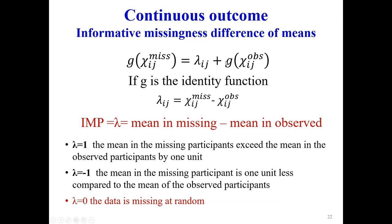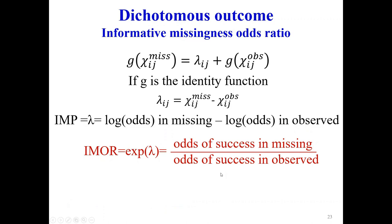If J is the identity function, then lambda is the difference in mean outcomes between missing and observed participants. For example, if lambda equals one, the mean in the missing participants exceeds the mean in the observed participants by one unit. If lambda equals minus one, it's the reverse. If lambda equals zero, the mean values in both groups are the same — this is like assuming data are missing at random.